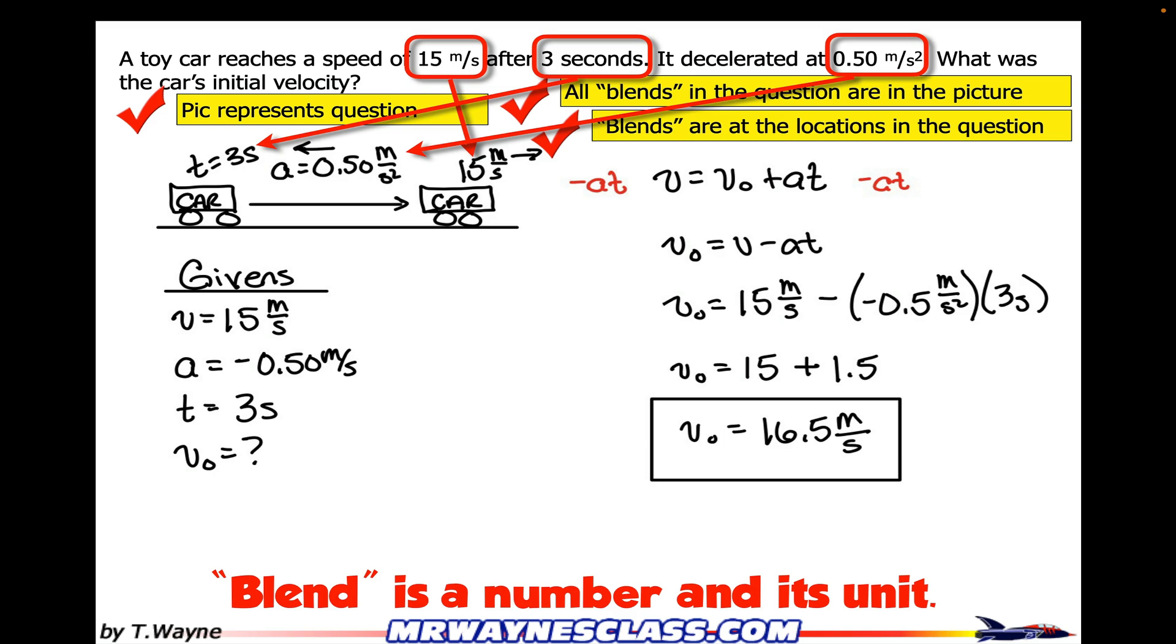The time, the distance, and acceleration, that all happens in between the velocities. It also asks for the initial velocity. You don't need to put that on the picture, but that would be on the left-hand side if you did.